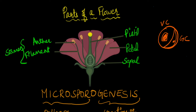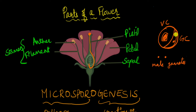Once the pollen grain lands on the stigma, it must reach the egg cell located deep inside the pistil. This is where the vegetative cell comes in — it begins to grow and forms a long, slender pollen tube. Once the pollen tube forms, the generative cell undergoes mitosis to produce two mature haploid male gametes. These male gametes travel down the pollen tube to reach the female egg cell, where they fuse to form the zygote. What happens after the zygote is formed is a story for another video.